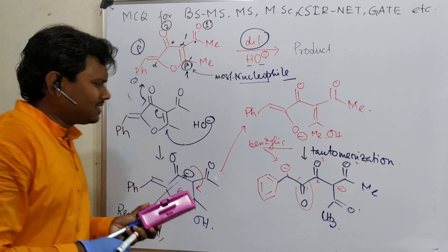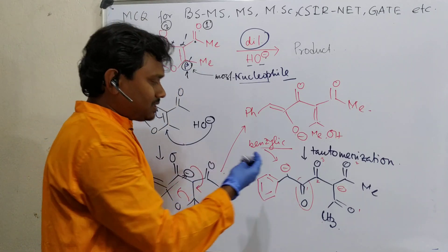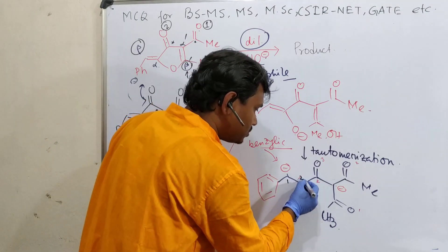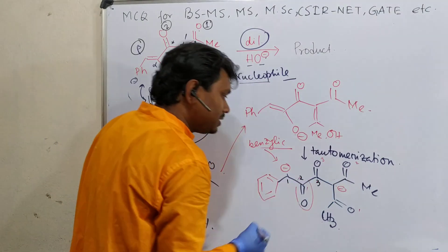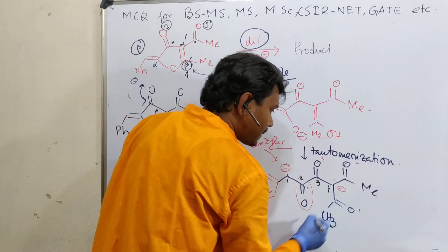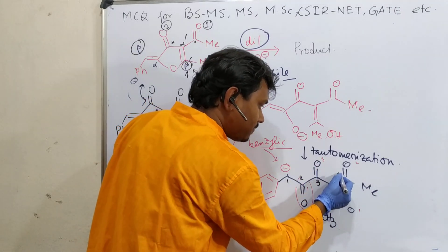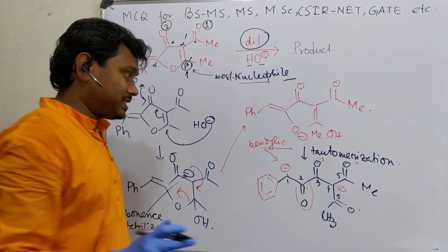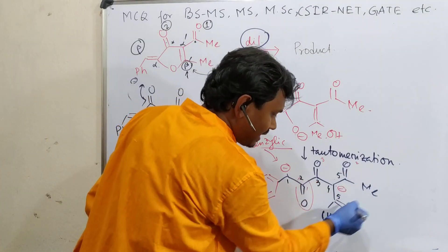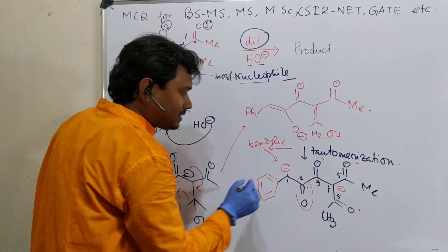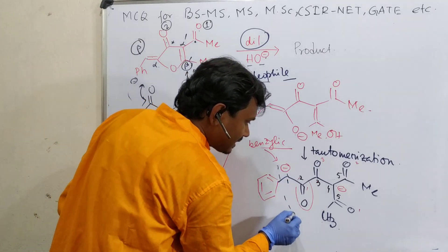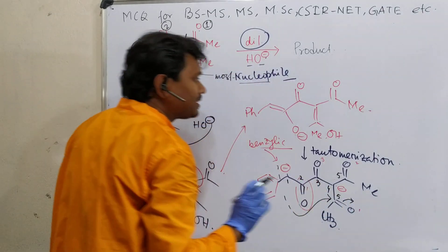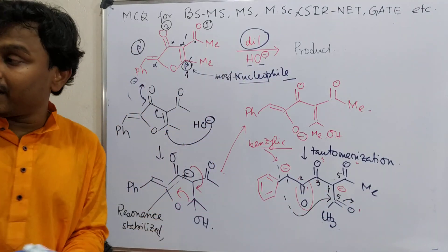Now we have lots of interesting things. Counting the ring positions: one, two, three, four, five - both ways give five. So no problem - they are symmetrical. This is a keto methyl position. So we can think that this carbanion can attack here and it can open up. I believe you have understood. This is really tough - I believe it is a tough example.